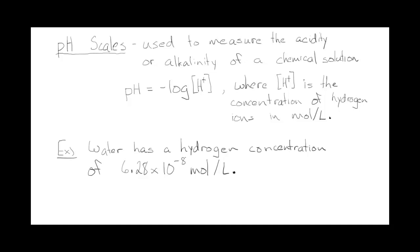A pH scale is used to measure the acidity or alkalinity of a chemical solution or substance. The pH is usually a number between 0 and 14, and the way you get this pH number is using a logarithmic equation.